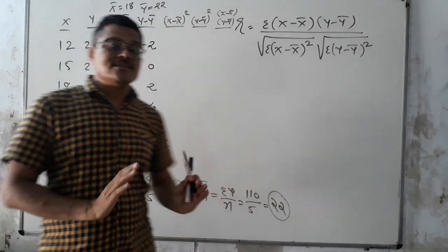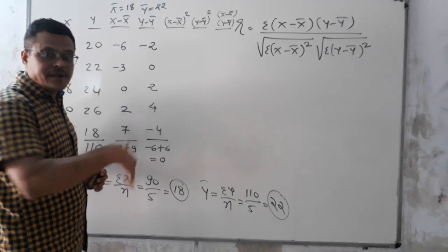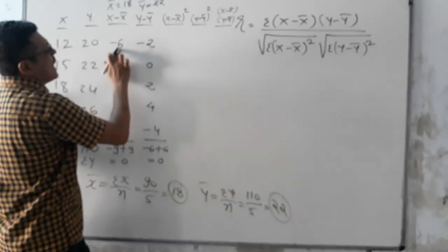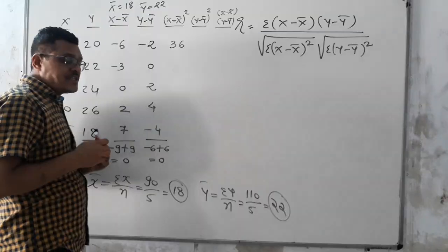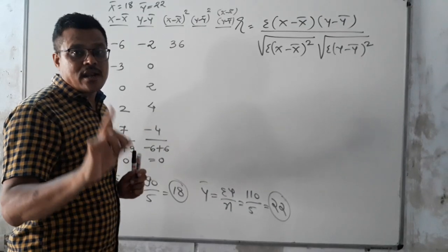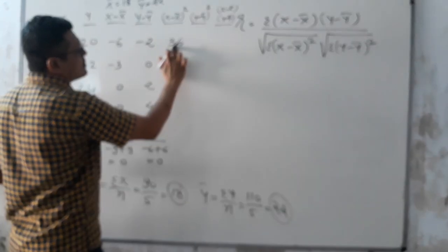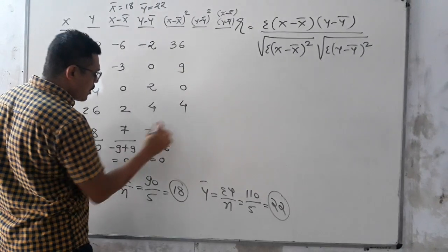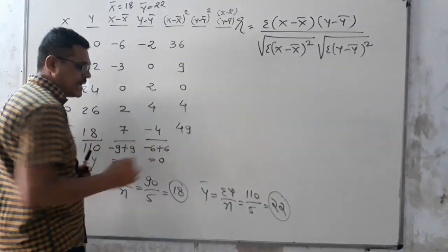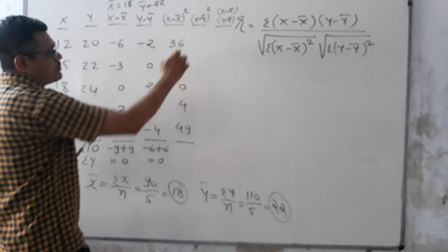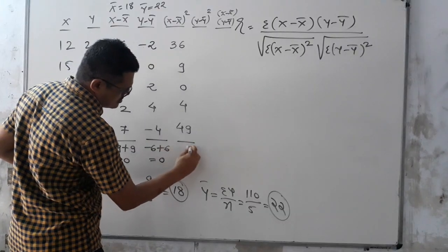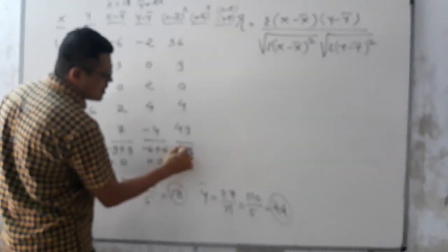Next column: (X − X̄) whole square. Square each value from column 1. One important thing: squares are always positive, never negative. So: (−6)² = 36; (−3)² = 9; 0² = 0; 2² = 4; 7² = 49. The total of these values is 98.